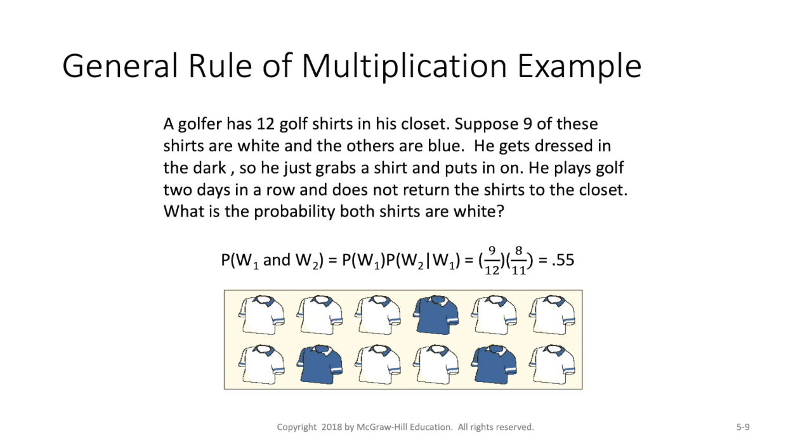Well, so of those nine white shirts, we have to subtract one. And so there's only eight possible white shirts in his closet. And instead of 12 total shirts, he's not returning that dirty shirt. So there's only 11. So the probability we multiply times is eight over 11. And so the probability that our golfer will wear a white shirt both days is 0.55. And this is how we use the general rule of multiplication.